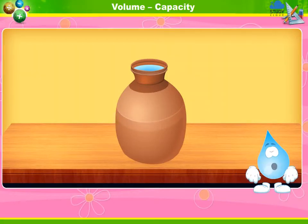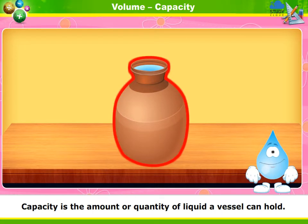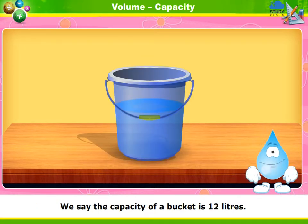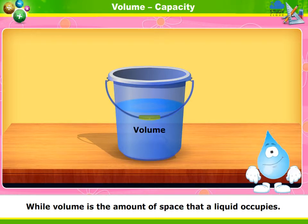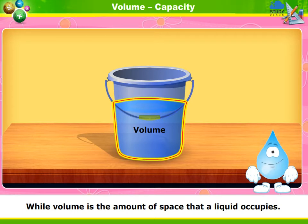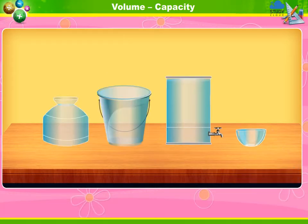Capacity is the amount or quantity of liquid a vessel can hold. We say the capacity of a bucket is 12 liters. Volume is the amount of space that a liquid occupies. We say the volume of water in the bucket is 5 liters. Let us take an example.